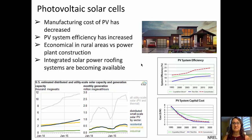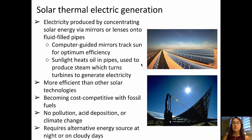A relatively new technology is solar thermoelectric generation, which takes advantage of concentrating solar energy via mirrors or lenses onto fluid-filled pipes, with a computer-guided system tracking the sun for optimum efficiency. That sunlight heats oil in those pipes to produce steam, which turns turbines and generates electricity. It's more efficient than other solar technologies and becoming cost-effective compared with fossil fuels. Solar power produces no pollution, acid deposition, or climate change impacts. One concern is that on cloudy days or at nighttime, an alternate source of energy is required.